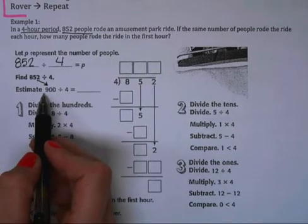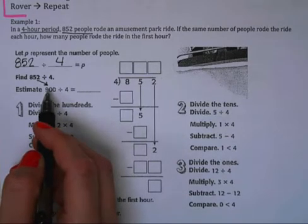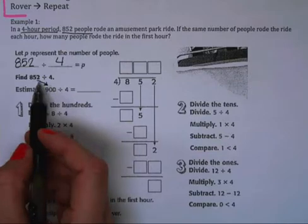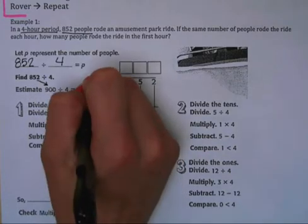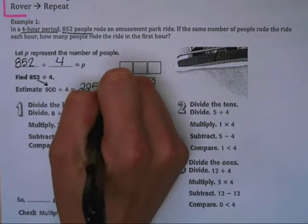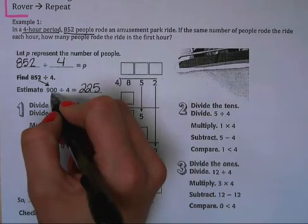Now we start off by estimating, just like we did with multiplication. When we have an estimate that helps us check to make sure our final answer is reasonable. If we round 852 to 900, 900 divided by 4 is 225. So our final answer should be somewhere in that area, probably a little bit smaller since we rounded up here.